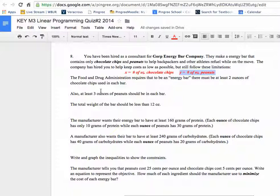The Food and Drug Administration says that the energy bar needs at least two ounces of chocolate chips. I don't know why, but that's what they say. So that is going to be a simple x. It's got to be greater than or equal to two. It's only dealing with our chocolate chips. There's also a restriction on peanuts, and that is we must have at least three ounces of peanuts in each bar.